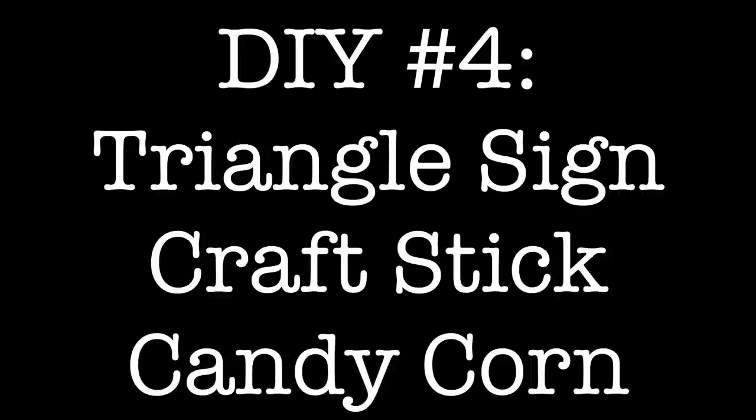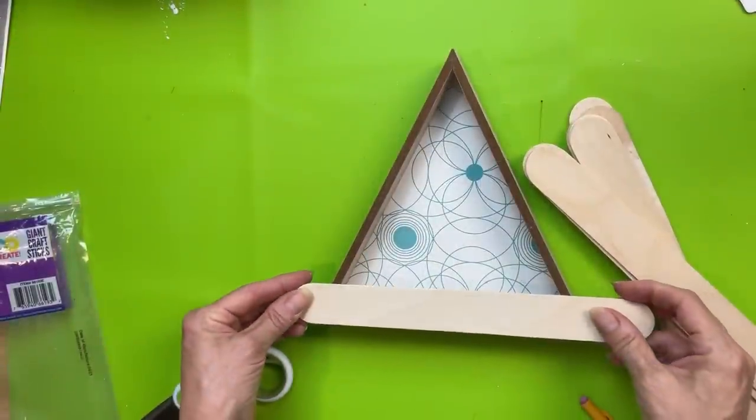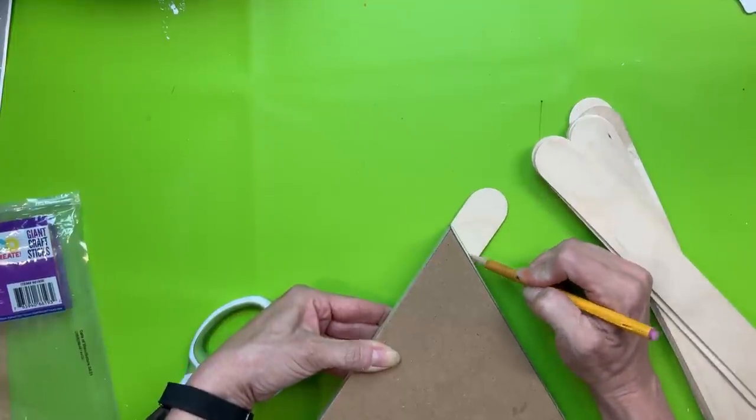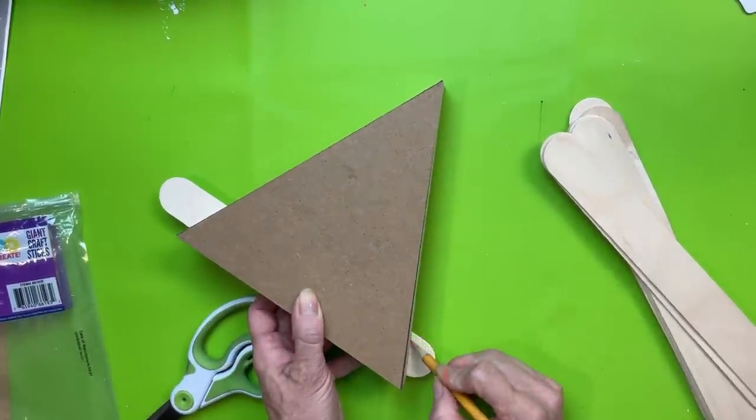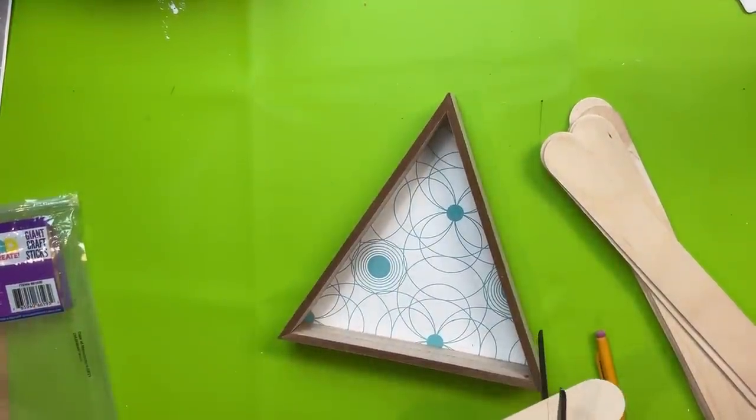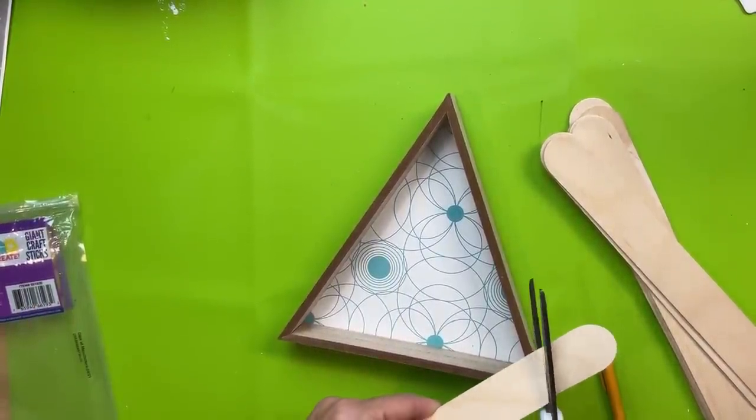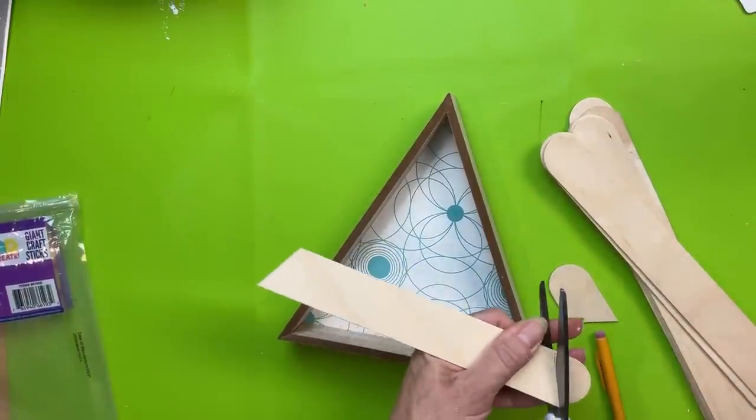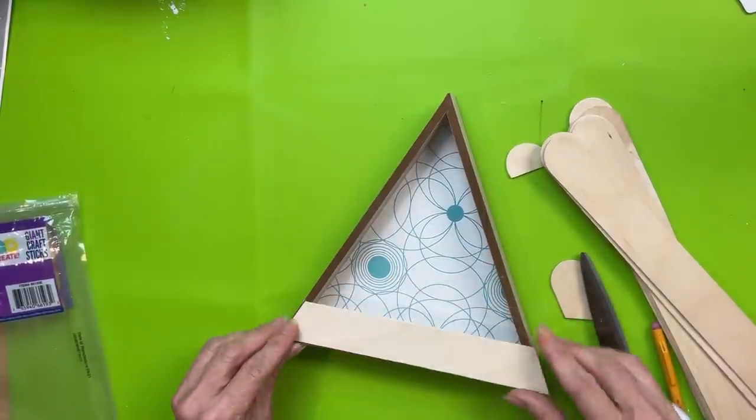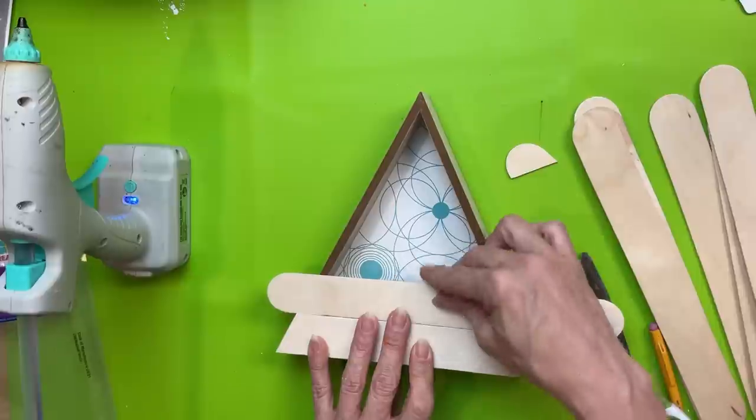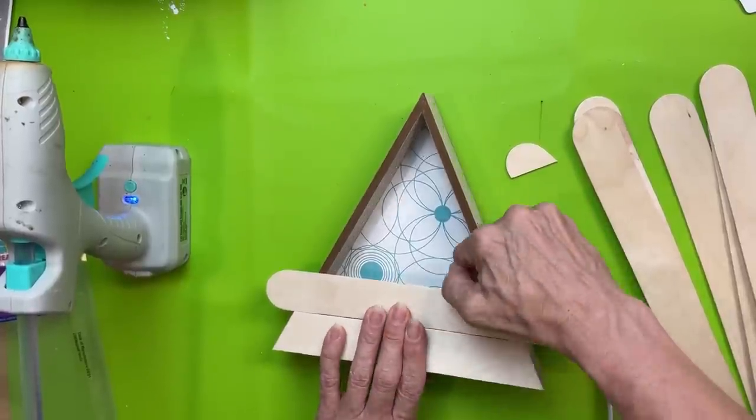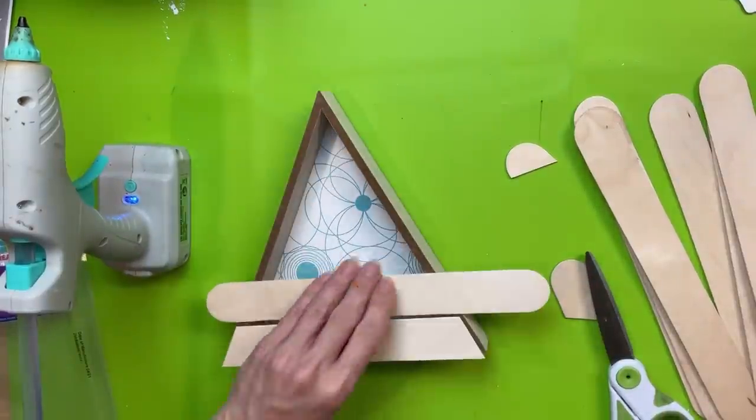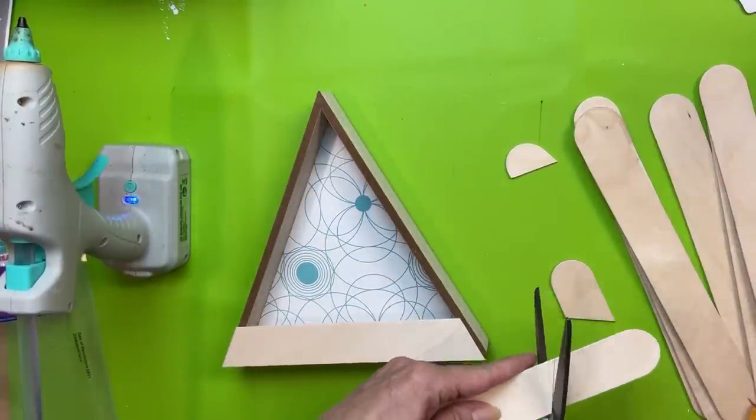For DIY number four, we're going to be using one of these triangle signs from Dollar Tree, as well as some of these giant craft sticks from Walmart's craft section to make a simple but cute little candy corn decor for the fall. So here you can see I'm flipping it around and marking where I need to cut each of my craft sticks. About six of these are going to fit perfectly with a little bit of space left at the top that you could either leave or just put a tiny little piece of wood. So I'm going to cut a few of my sticks and then we'll start hot gluing those down, kind of like we did with our wood crate pumpkins. We're just closing off that open backside to make a hollow solid shape.